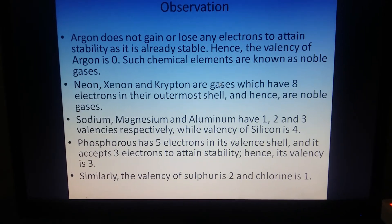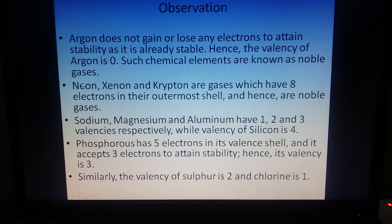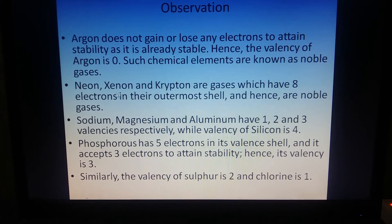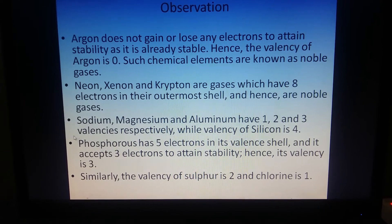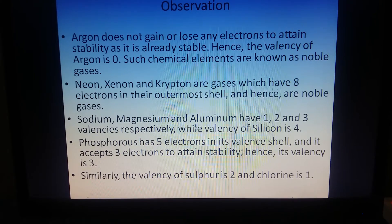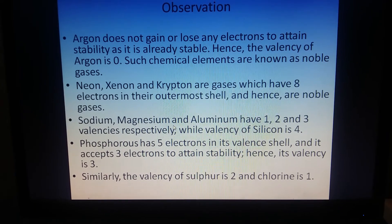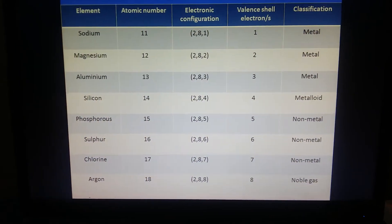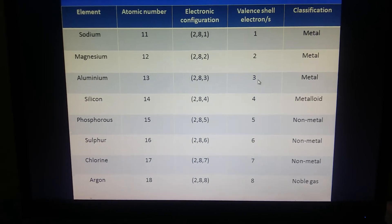Such elements are known as noble gases. Neon, xenon, and krypton are gases which have 8 electrons in their outermost shell — they are called noble gases. Sodium, magnesium, and aluminium have valencies of 1, 2, and 3 respectively.